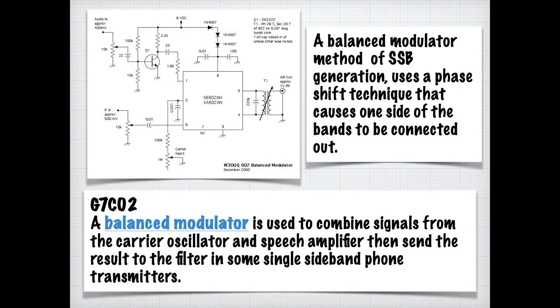We're talking about sideband, particularly sideband phone. So it uses a balanced modulator method of single sideband generation, which uses phase shift technique that causes one side of the bands to be connected to the output. For the exam, you need to know that a balanced modulator is used to combine signals from the carrier oscillator and speech amplifier, then send the result to a filter in some single sideband phone transmitters.